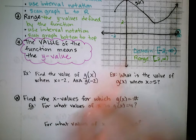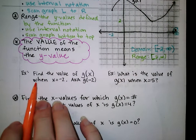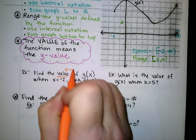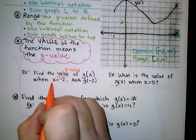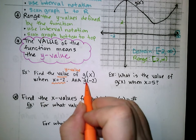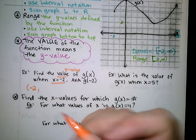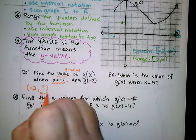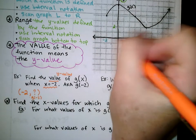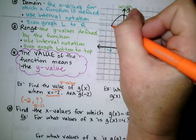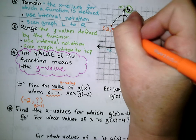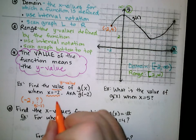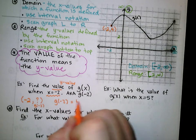Let's look at being able to ask some questions about this graph besides domain and range. We want to find the value of g of x — remember, value means y value — when x equals negative 2. So this means g of negative 2. I'm looking for the ordered pair that has negative 2 comma something. If x is negative 2, I go up to this ordered pair here, and it is negative 2, 4. So the value of g of negative 2 would be 4.